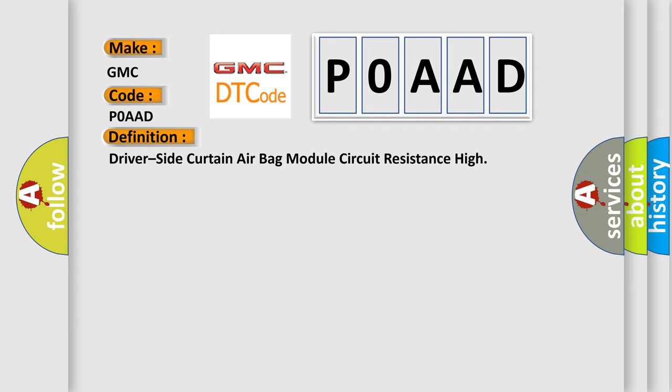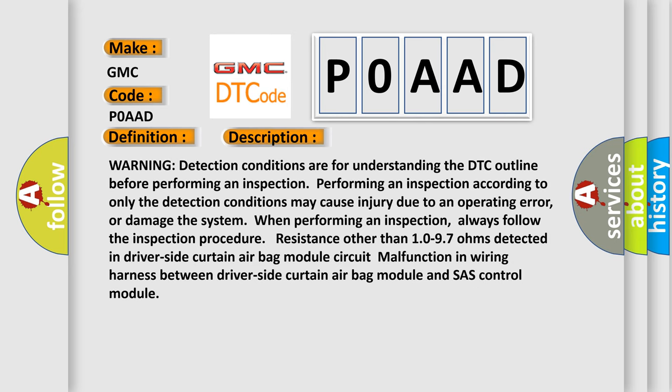Here is a short description of this DTC code. Warning: detection conditions are for understanding the DTC outline before performing an inspection. Performing an inspection according to only the detection conditions may cause injury due to an operating error, or damage the system. Always follow the inspection procedure. Resistance other than 10 to 97 ohms detected in the driver side curtain air bag module circuit indicates a malfunction in the wiring harness between the driver side curtain air bag module and the chassis control module.